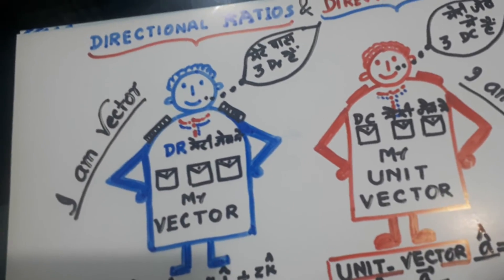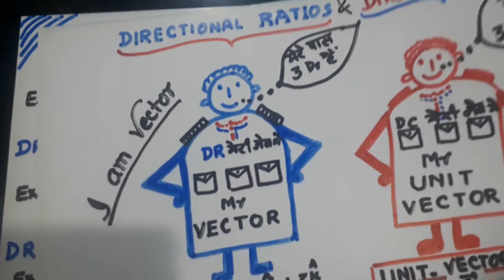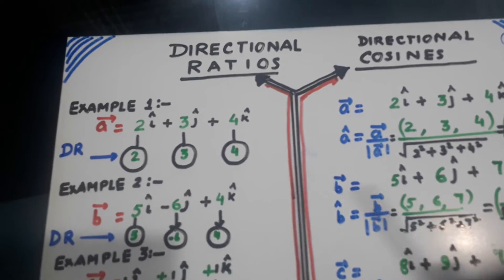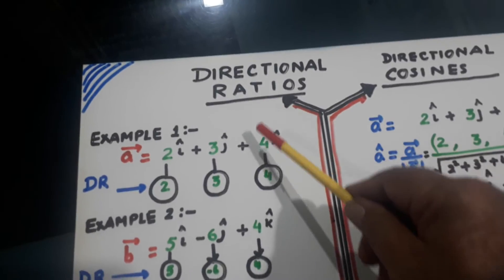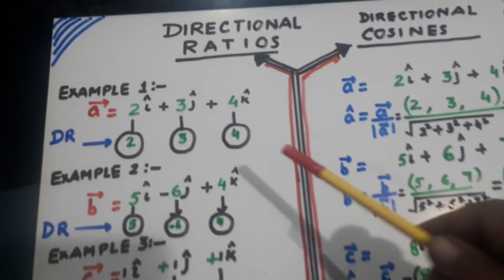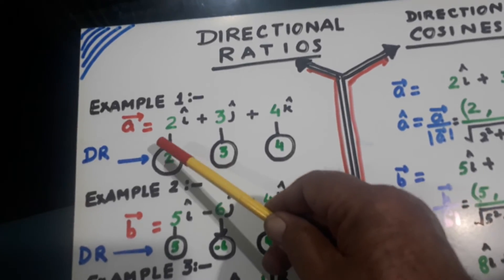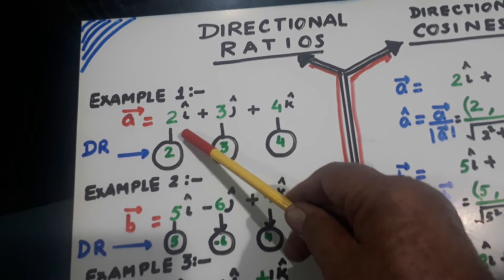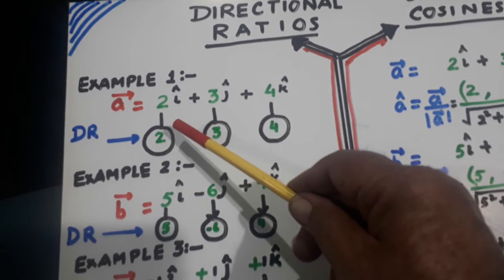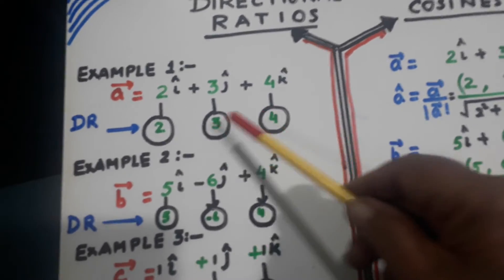Now I will be taking few examples. Look here. These are directional ratios. Here we have calculated the directional cosines. Vector a is there. It has components 2, 3 and 4. So this 2, 3 and 4 are called doctor.